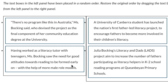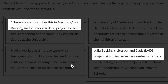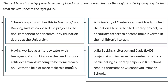So what I will do now is read these two sentences more carefully, so that I can see if logically I can put them in the right order. The first reads: 'There is no program like this in Australia, Miss Bocking said, who devised the project as the final component of her community education degree at the university.' The next sentence is: 'Having worked as a literacy tutor with teenagers, Miss Bocking saw the need for good attitudes towards reading to be formed early on, with help of more male role models.' Comparing these two, we can clearly see the first sentence is talking about the project. And looking at the second sentence on the right-hand side, it says 'literacy in dad's project' — so here the project refers to Julia Bocking's project. That's why this must be the next sentence, as two sentences containing similar words must be together. And that will make 'there is no program like this in Australia, Miss Bocking said, who devised the project' the third sentence.